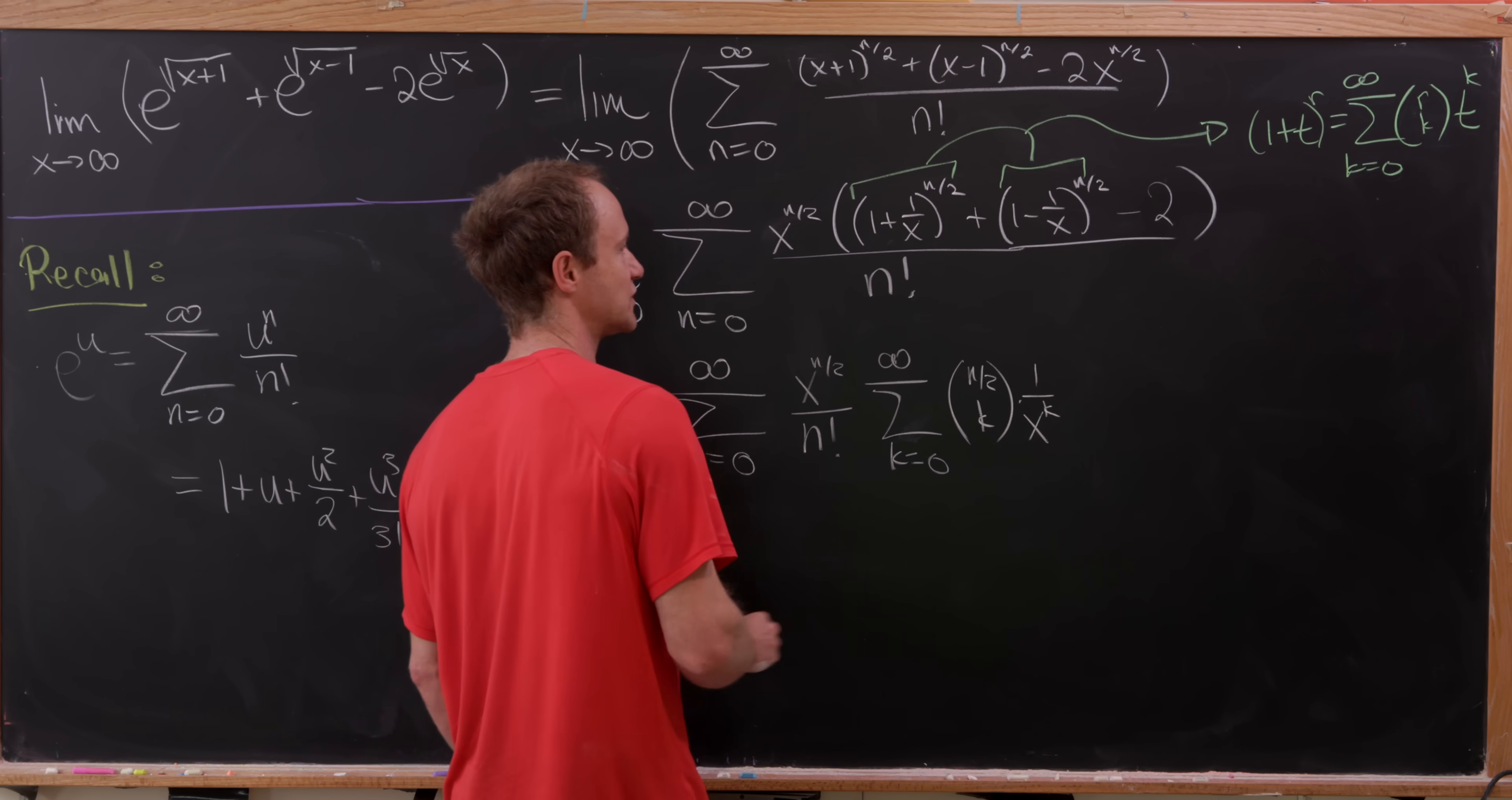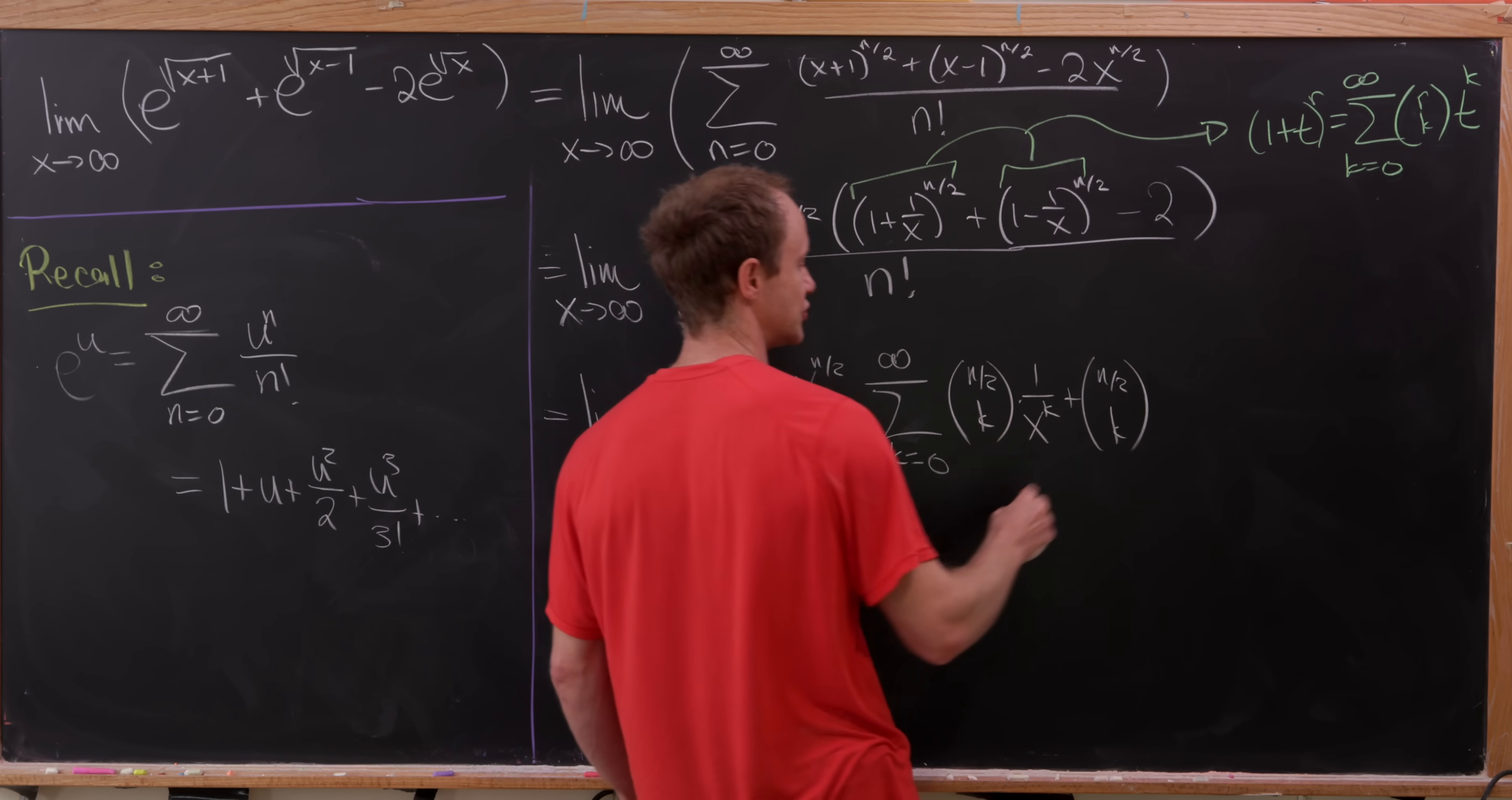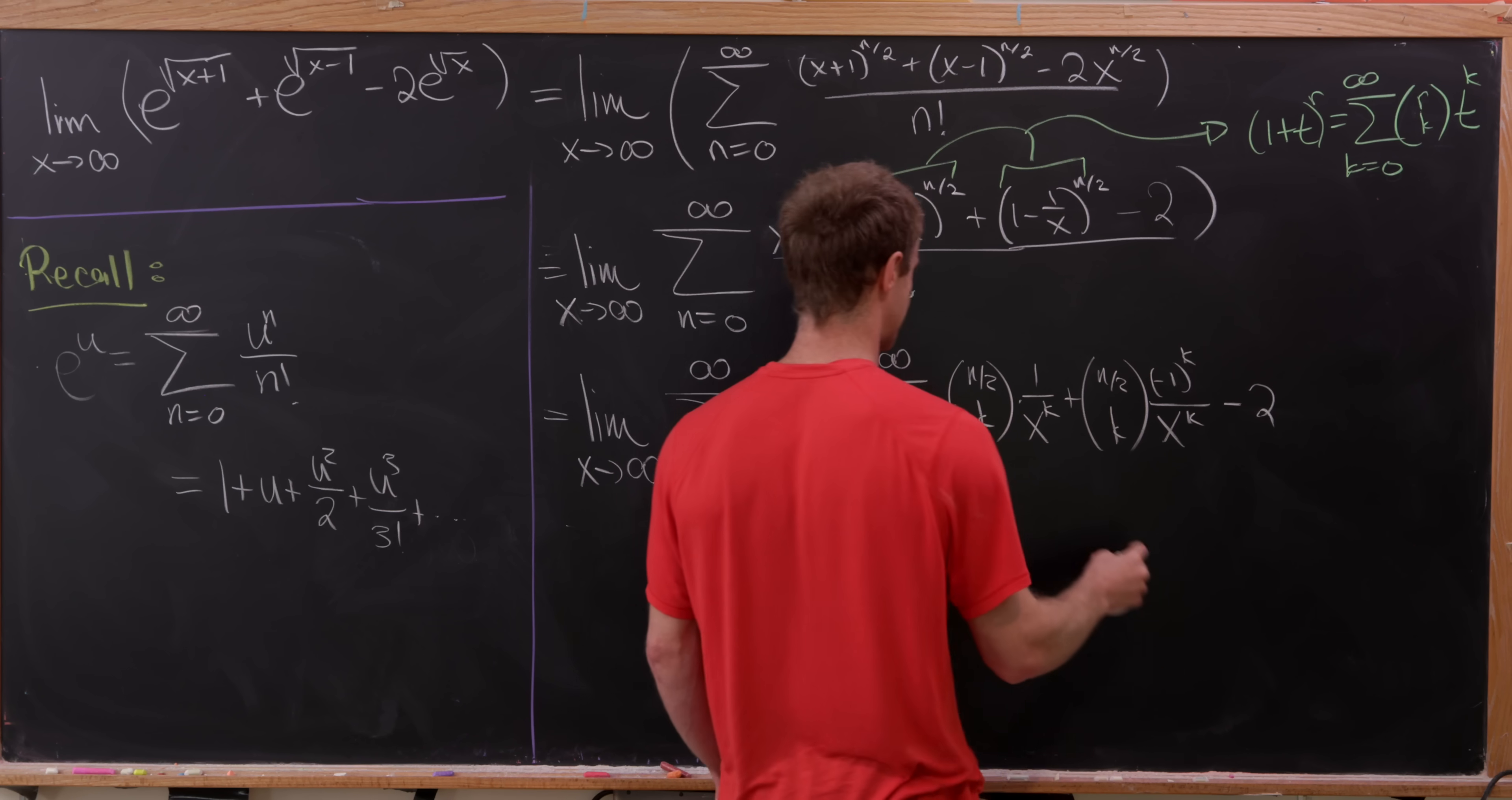So this first one will expand like, let's see, n over 2 choose k times 1 over x to the k. And the second one expands almost exactly the same, but it's going to be alternating. So n choose k, or sorry, n over 2 choose k minus 1 to the k over x to the k. And then finally minus 2.